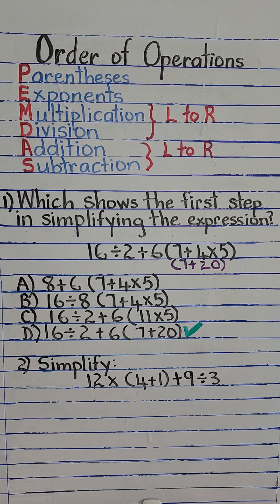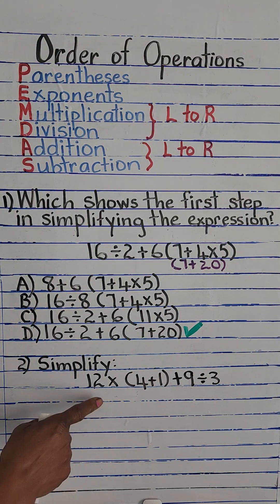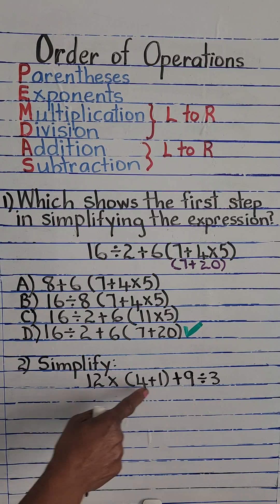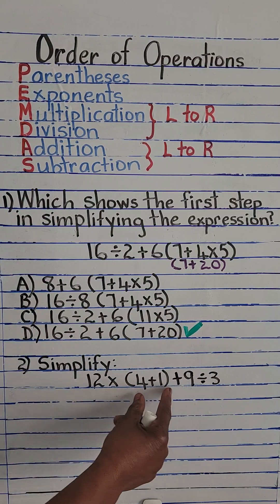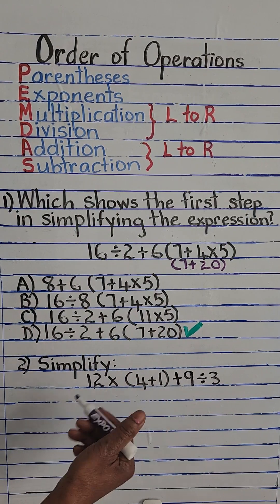Let's move on to example 2: simplify 12 times, parentheses 4 plus 1, close parentheses, plus 9 divided by 3. The first step is parentheses.